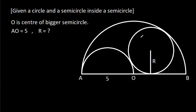In this video, we have been given a circle and a semicircle inside a semicircle. O is the center of the bigger semicircle, and AO is 5. We have to find the radius of the circle.